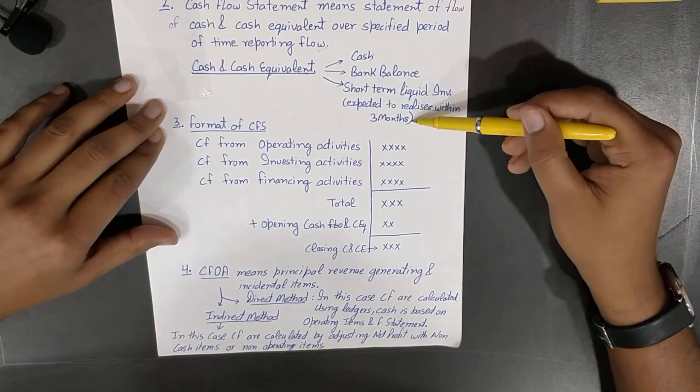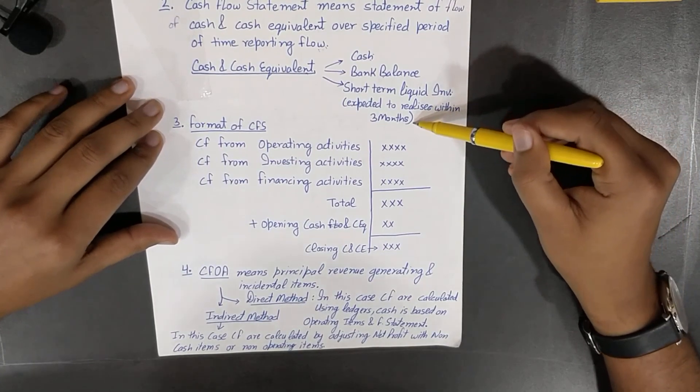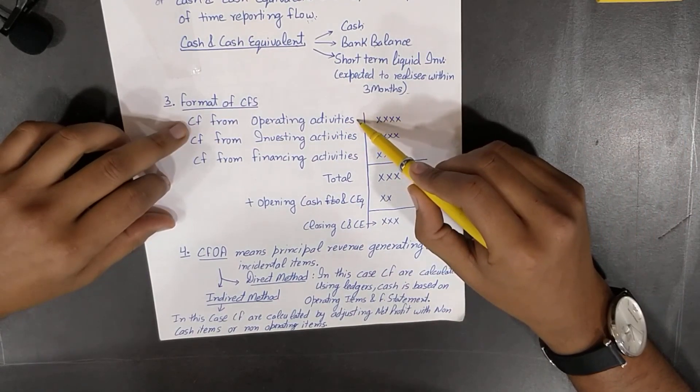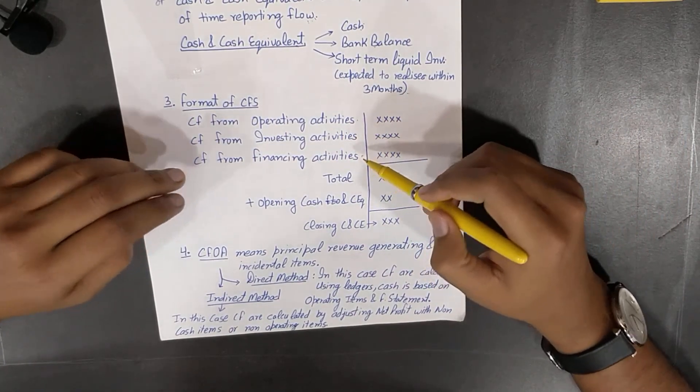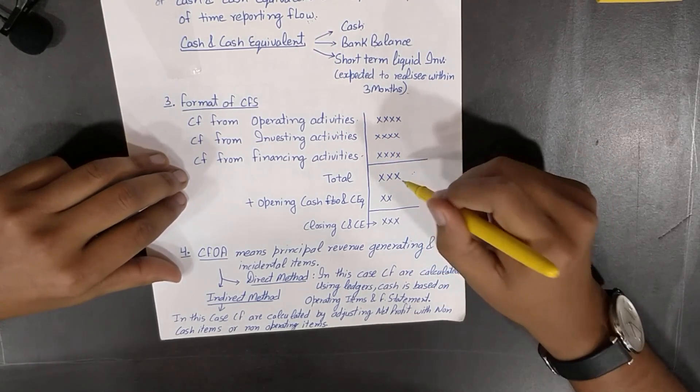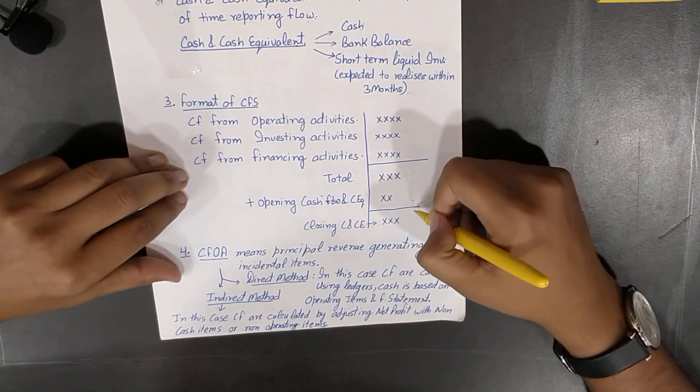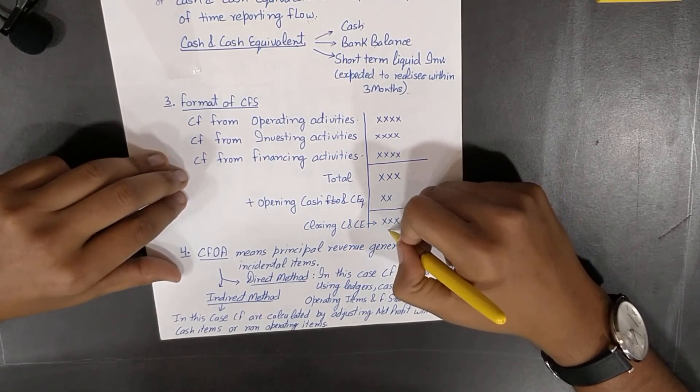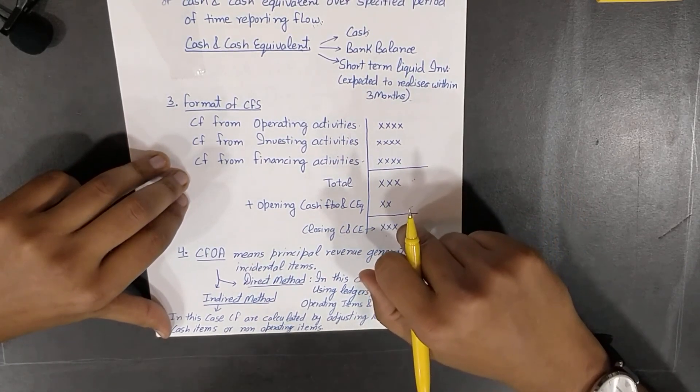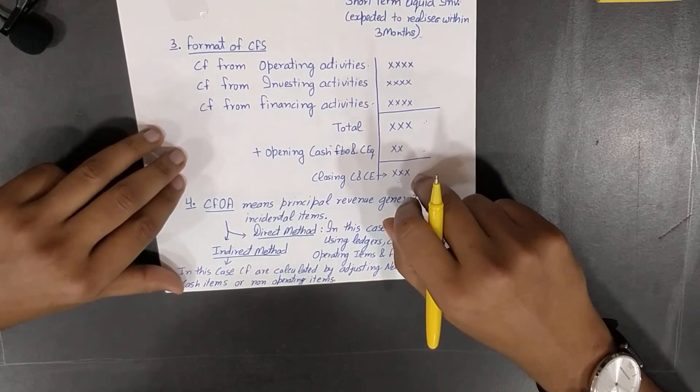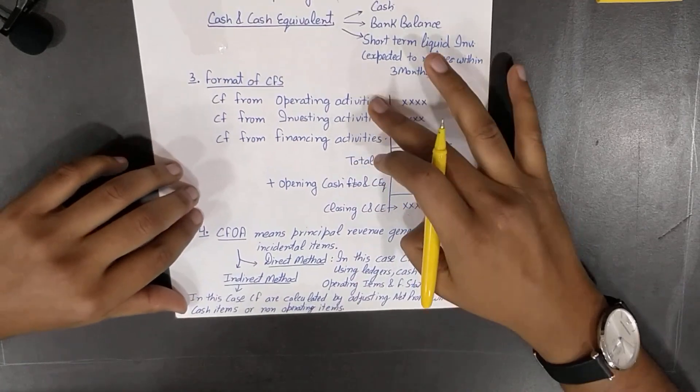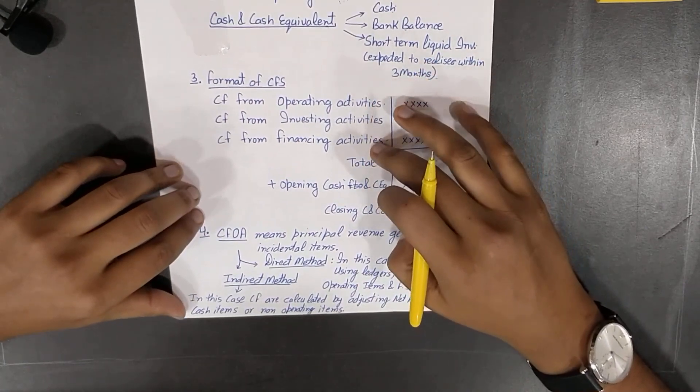Format of cash flow statement: operating activities cash flow, cash flow from investing, and financing. We all know three activities. Then we'll do the total and we'll add the opening balance and we'll get the closing balance. And if we get the correct closing balance, it means we have prepared the correct cash flow. All right.